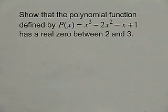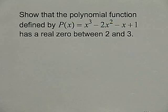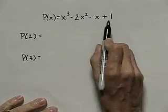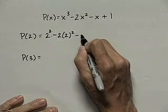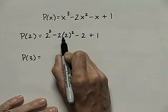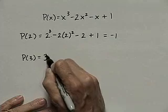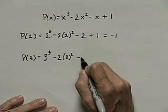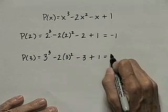Let's put some numbers into a statement like that and look at an example. We want to show that the polynomial function defined by p of x equal x cubed minus 2x squared minus x plus 1 has a real zero between 2 and 3. We're going to use the intermediate value theorem, so we'll find p of 2 and p of 3. For this polynomial function, p of 2 is found by evaluating 2 cubed minus 2 times 2 squared minus 2 plus 1. That's 8 minus 8 minus 2 plus 1, which is negative 1. p of 3 is 3 cubed minus 2 times 3 squared minus 3 plus 1, or 7.